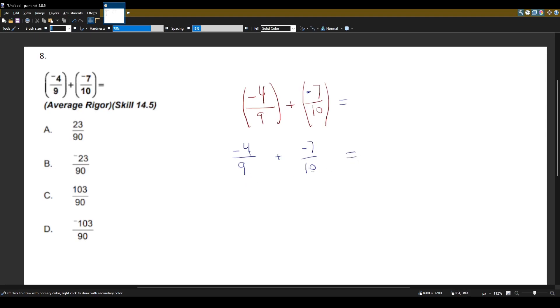Now we can't add them together like regular numbers because our denominators are different. Here we have denominator 9 and here we have a denominator of 10. So we want them to have the same denominator.